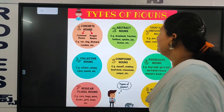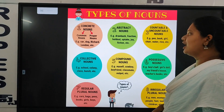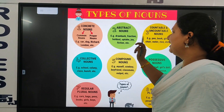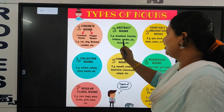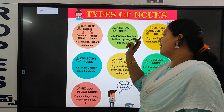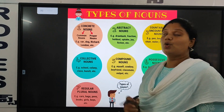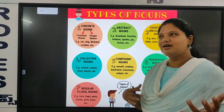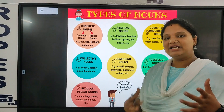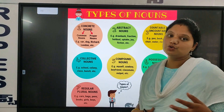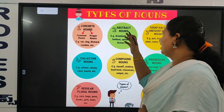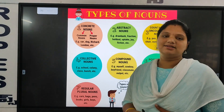Let's see abstract nouns. The abstract noun — it includes uptake, joy, fiction, drawback, fraction, holdout. These are words where we can share our feelings and emotions to another person. That is what we call an abstract noun.